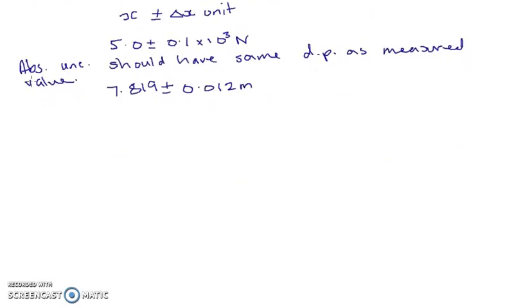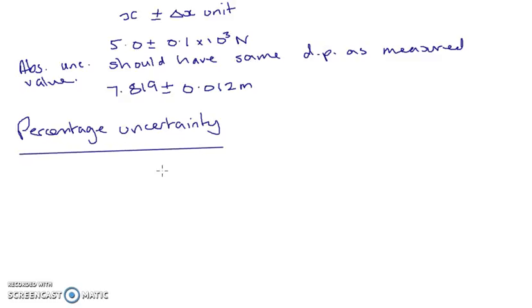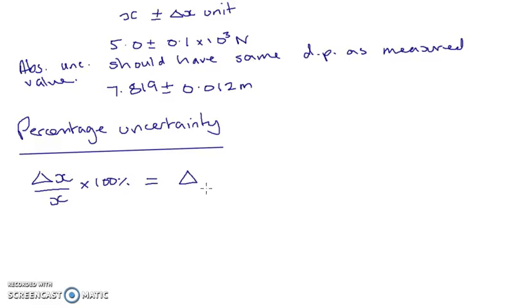The final thing for this video is percentage uncertainty. We're going to need absolute and percentage uncertainties when we get to the next video. To calculate a percentage uncertainty, we find out what fraction of our value our uncertainty is — we can leave it as a fractional uncertainty — but what we tend to do is multiply by 100% to find the percentage uncertainty. In notation, we keep it as delta-x but put a percentage sign, meaning the percentage uncertainty in x.